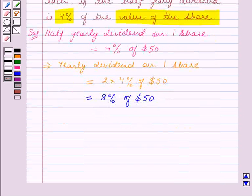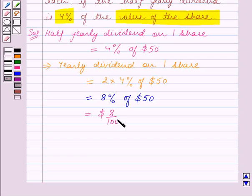This is equal to 8 upon 100 times $50, which equals $4.